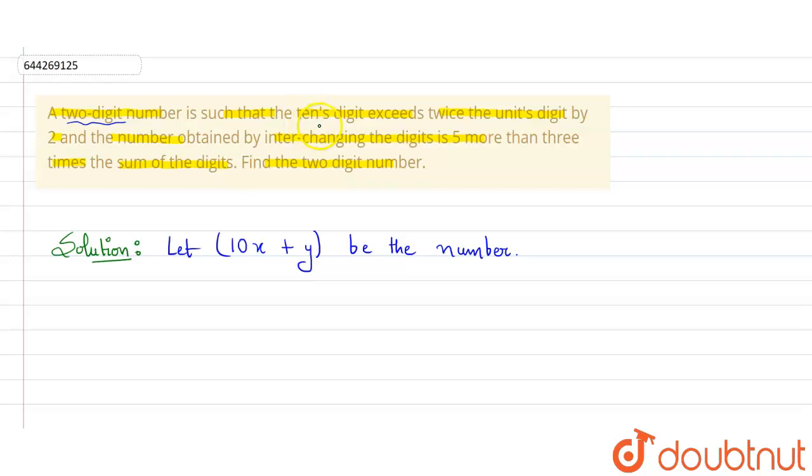Here it is given that the tens digit exceeds twice the units digit by 2. The tens digit is x. This is tens digit and this is units place. So it is given that the tens digit, that is x, exceeds twice the unit digit by 2, so x = 2y + 2. This is the first equation.